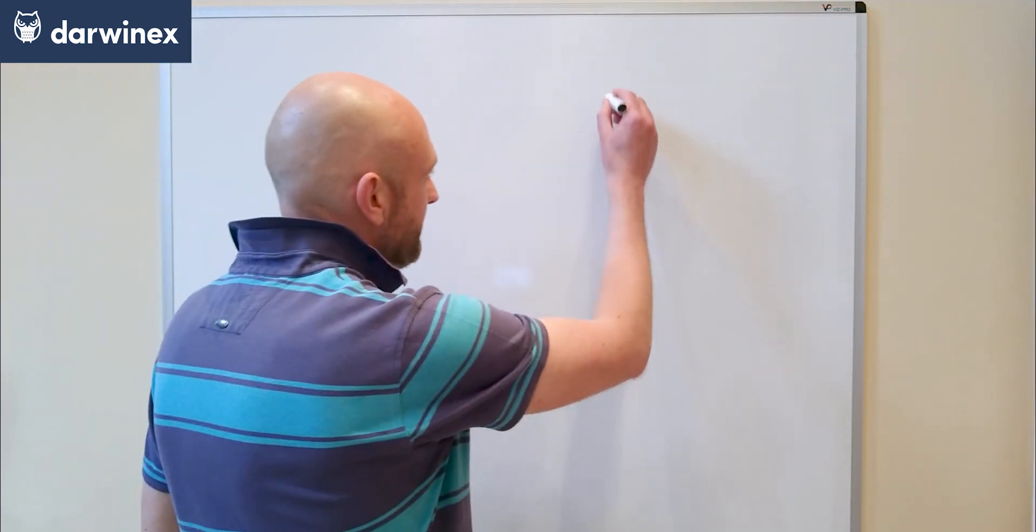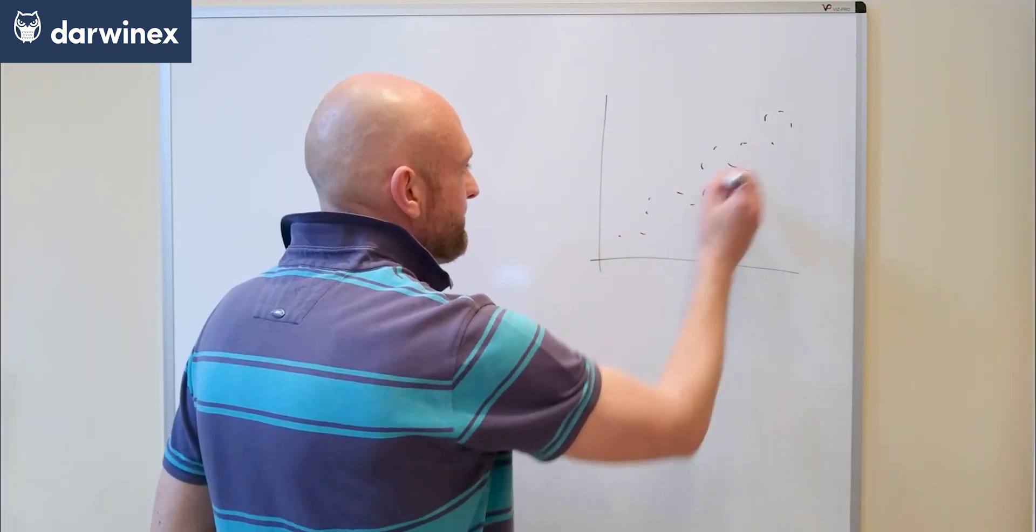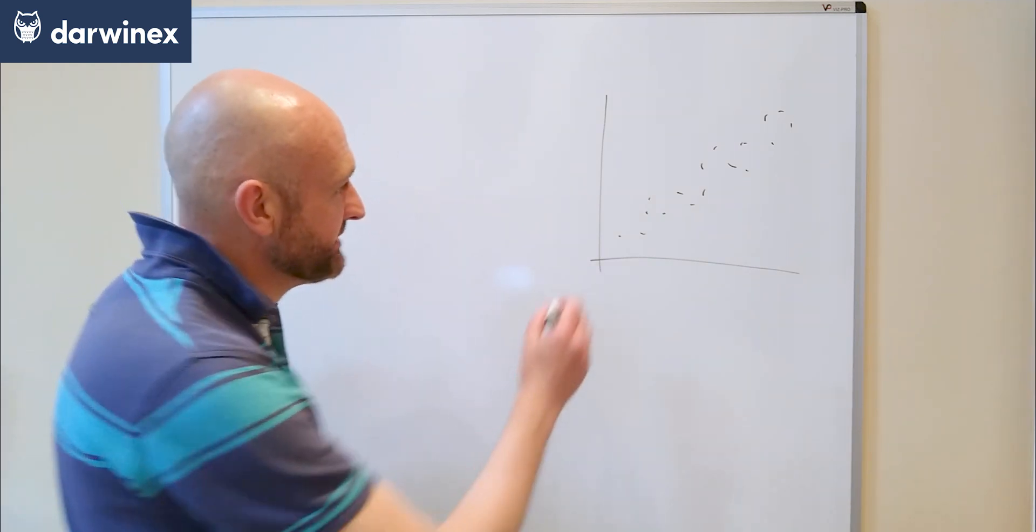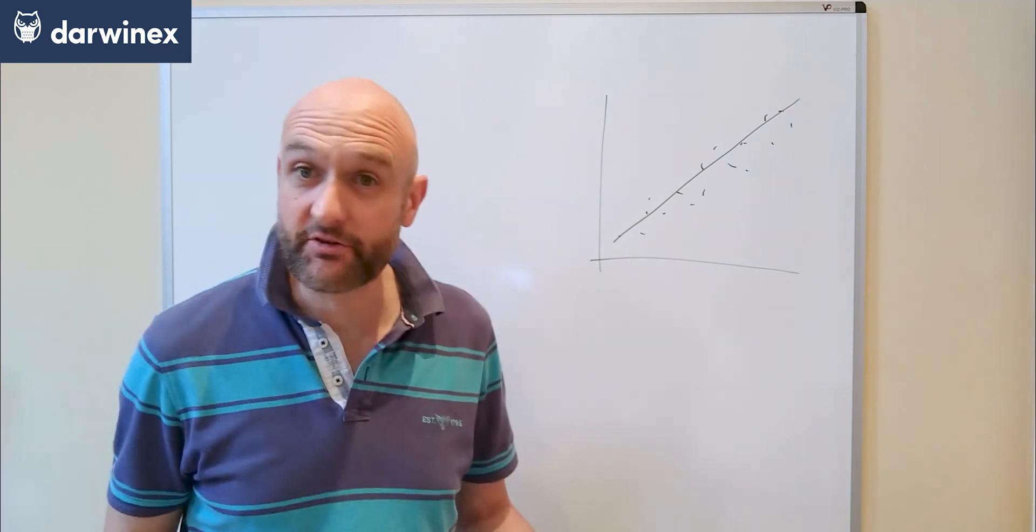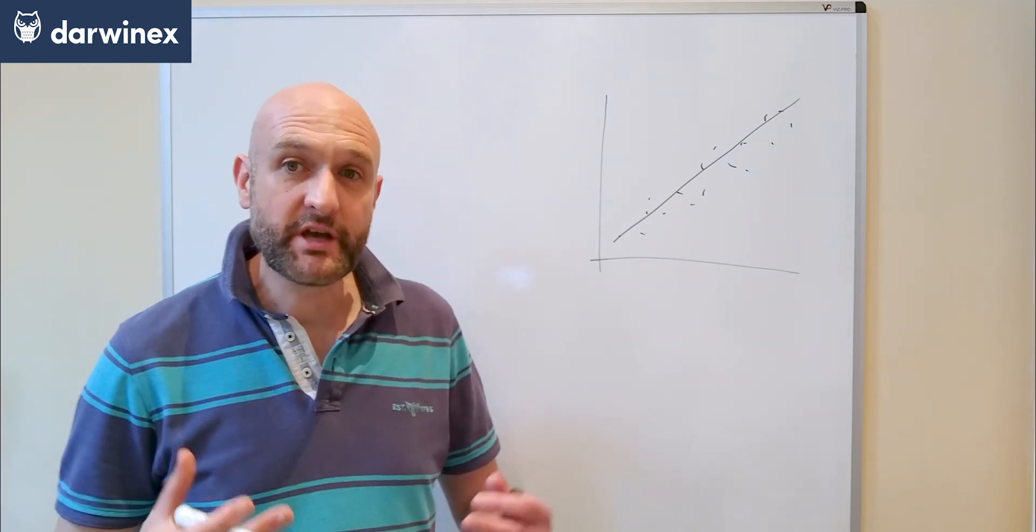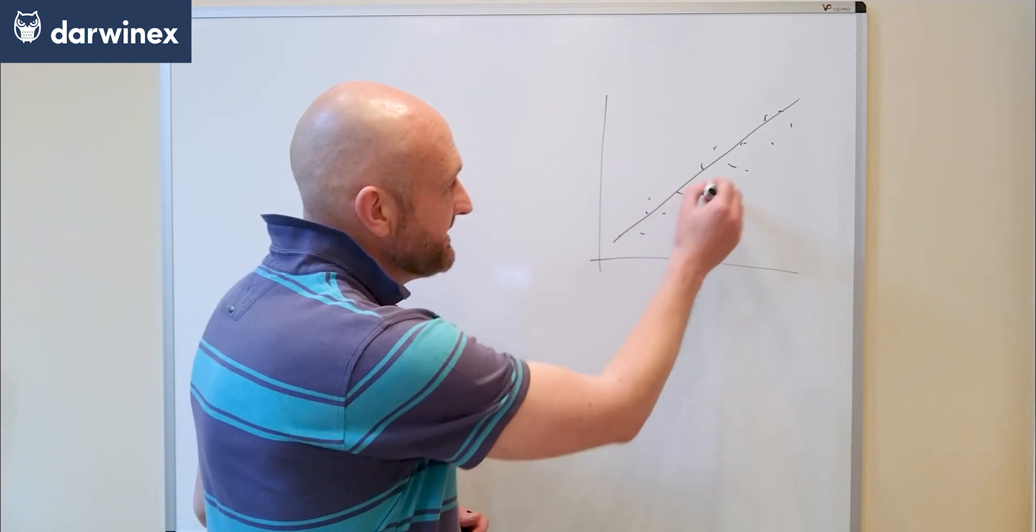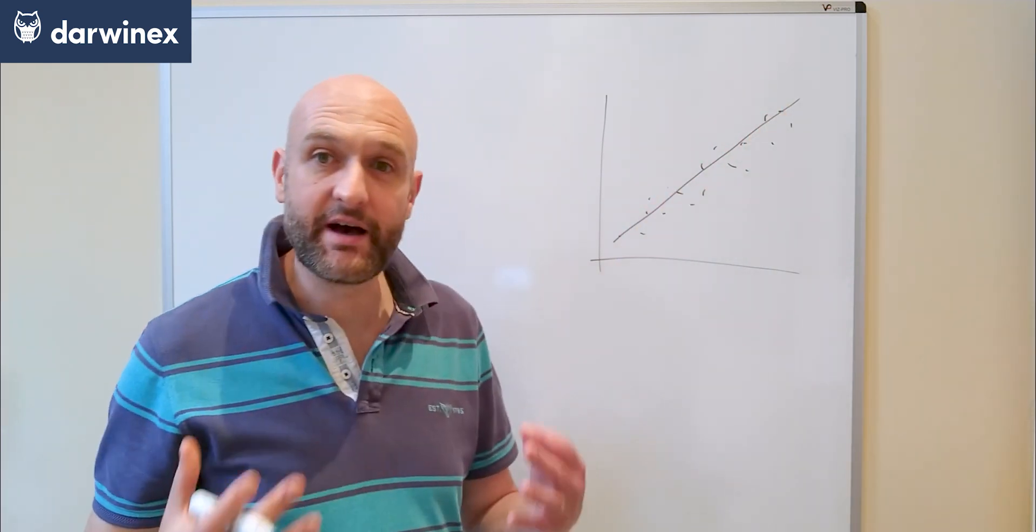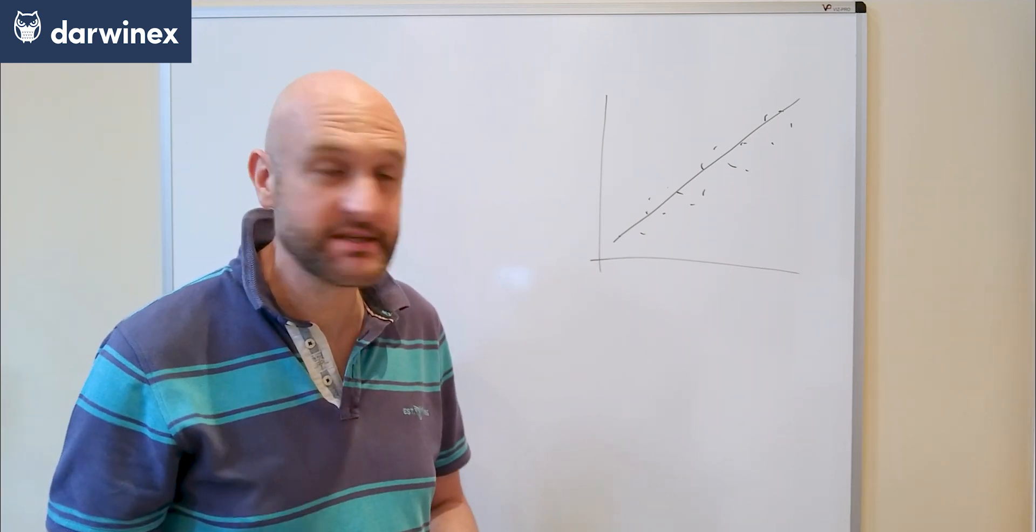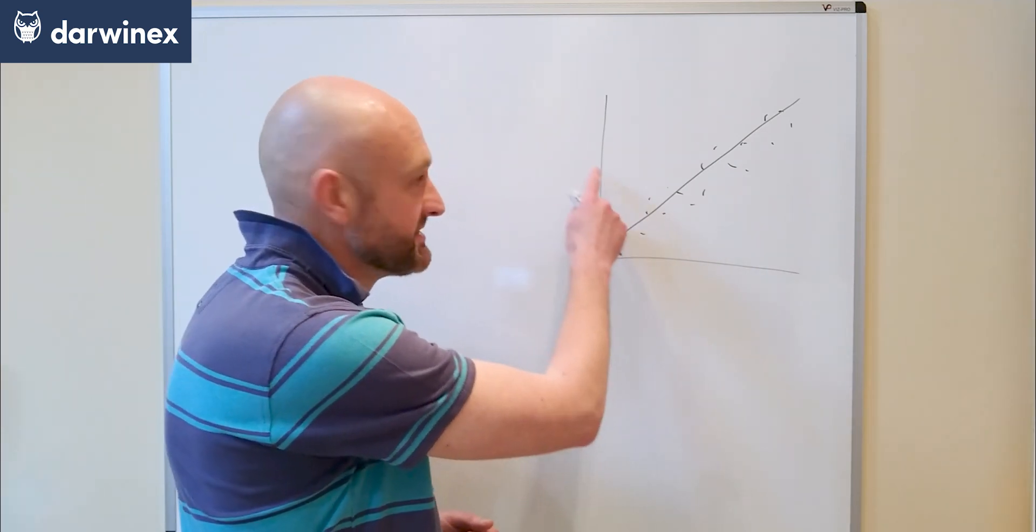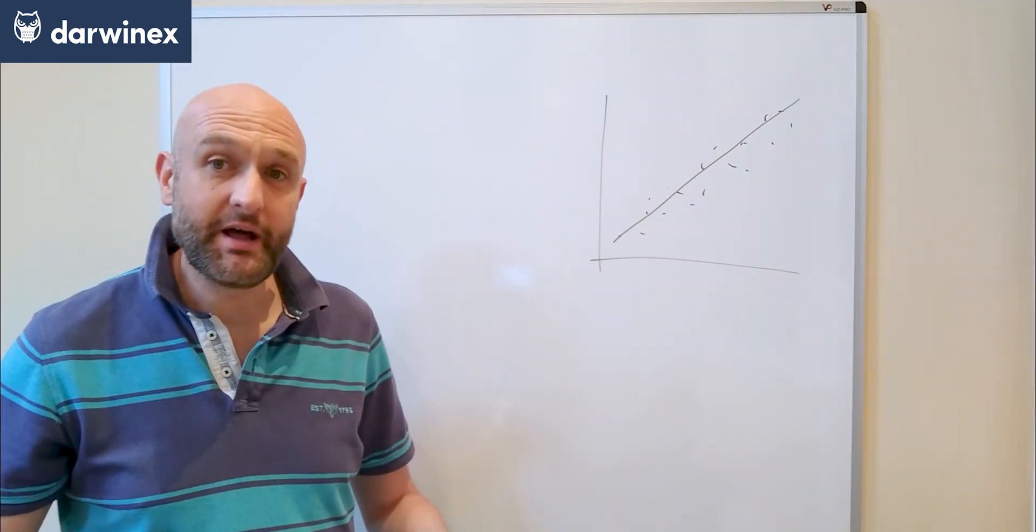Here we've got a number of points and through those points we can draw a line of best fit using linear regression techniques. What the coefficient of correlation does is look at how well these points sit around that linear regression line in order to tell us how strong that relationship is between the x-axis variables and the y-axis variables.